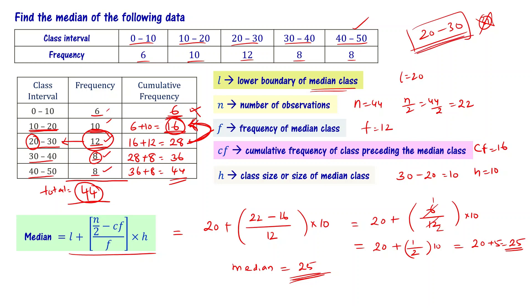Therefore, the median is 25. Even if there are minor calculation mistakes, 25 is the correct answer and not a wrong choice.